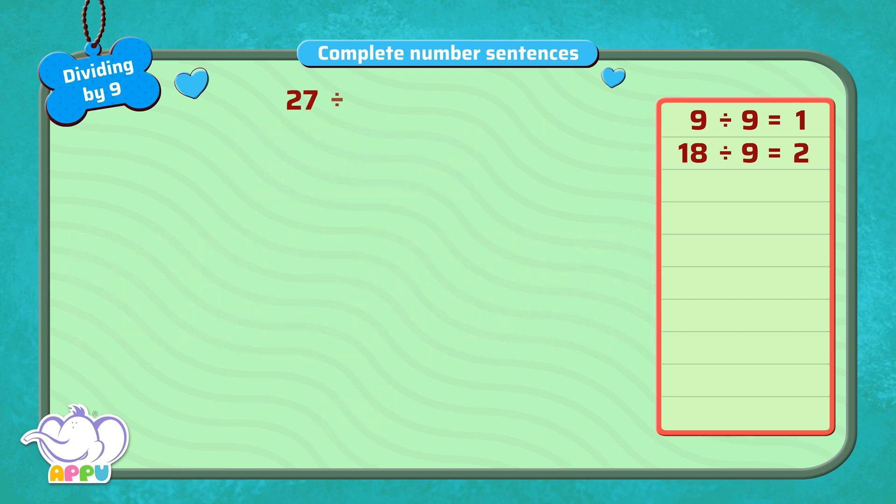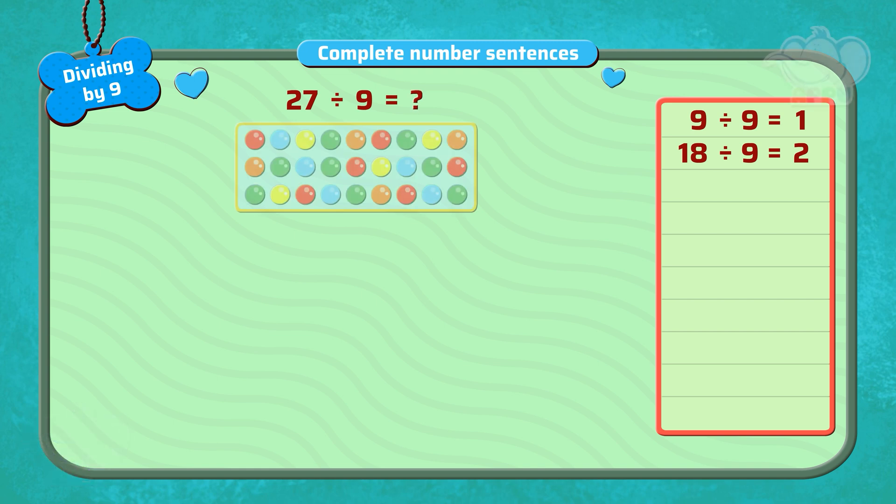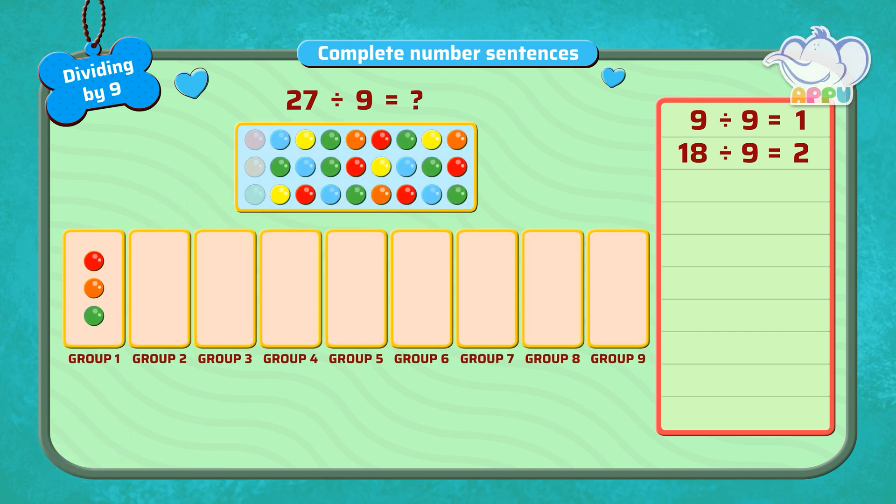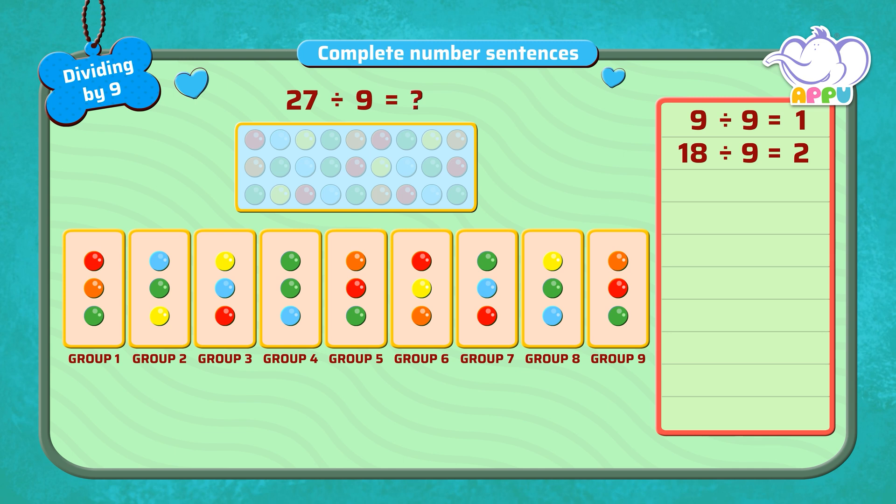What is 27 divided by 9? When we divide 27 beads equally into 9 groups, we get 3 beads in each group. So the answer is 3.